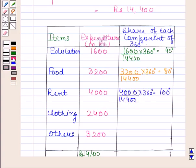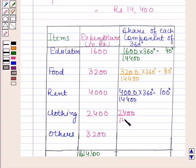Expenditure on clothing is 2400, so we have 2400 divided by 14400 multiplied by 360 degrees, and this is equal to 60 degrees.